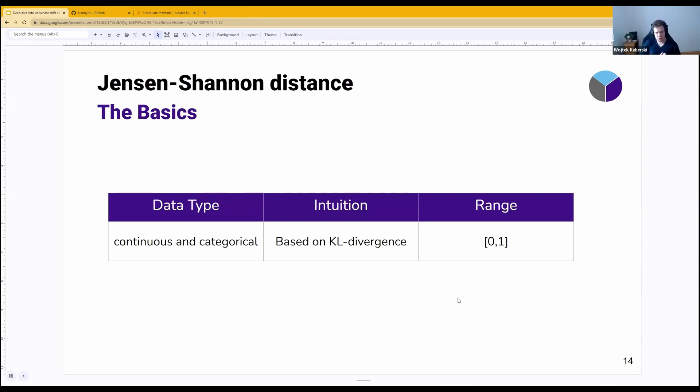When it comes to the quick intuition, it is based on KL divergence, which is probably one of the best known ways to compute the divergence, the difference between two features. I'm trying to not use the word distance because KL divergence is actually not a distance measure.